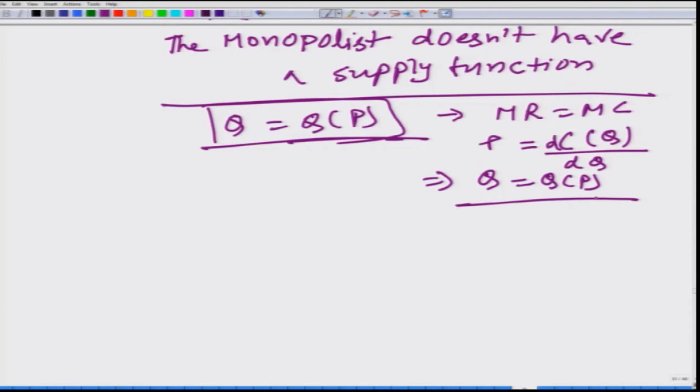Why cannot we do the similar thing in case of monopolist? Remember that for monopolist MR is not equal to P. The marginal revenue depends on the demand function which is not in control of the monopolist.